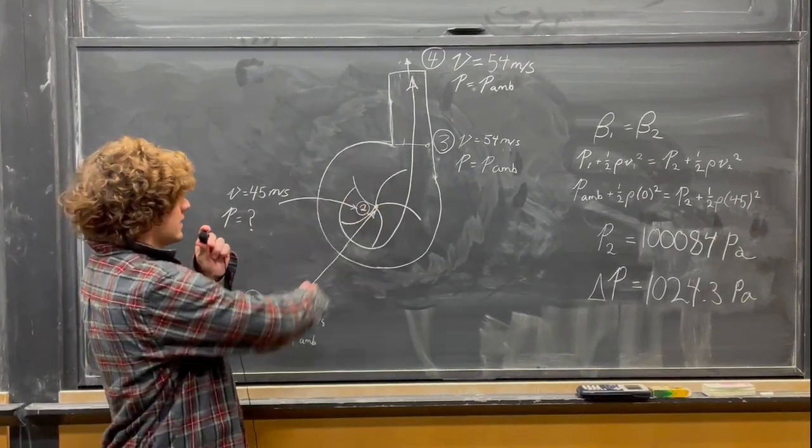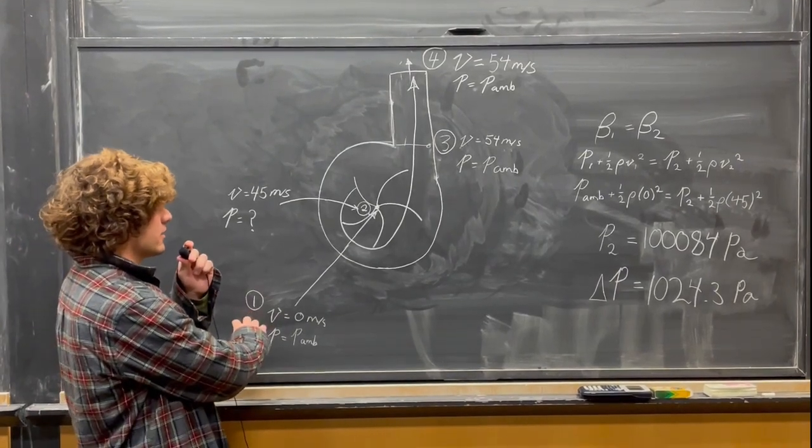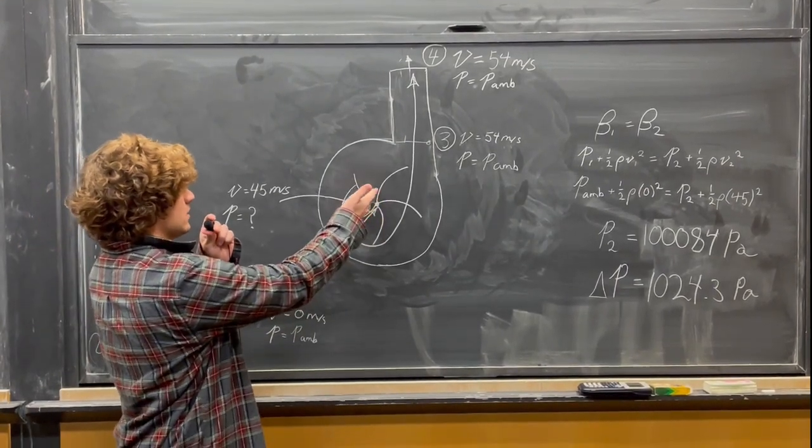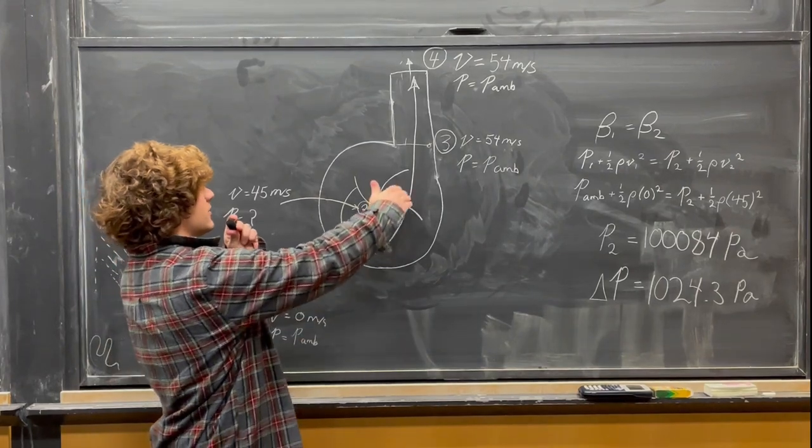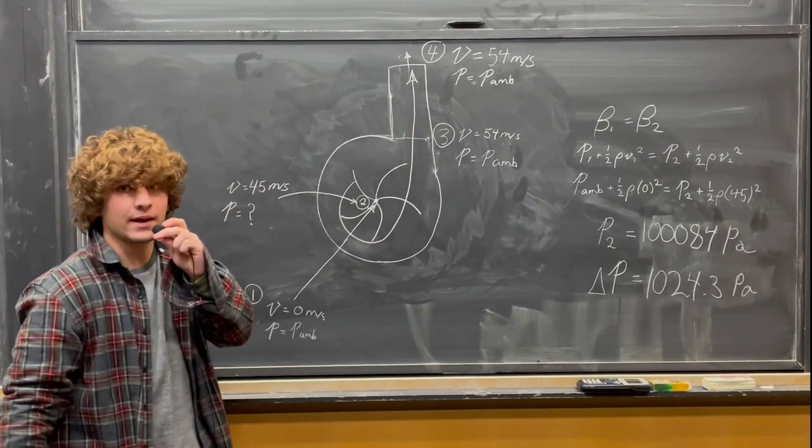We can define a streamline that goes from outside the impeller, in through the eye, around through the flow, and up and out into the vacuum bag.